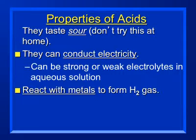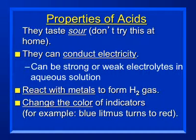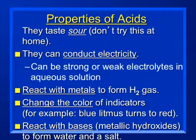Most of the time, acids will change the color of indicators. This is how pH paper works: based on the amount of hydrogen in solution, it changes the pH paper or whatever indicator we're using to a specific color. And if acids react with a base, they will form hydroxides as a product, or react with a hydroxide to produce water and salt.